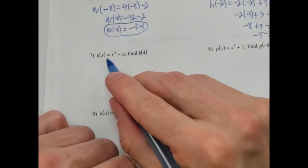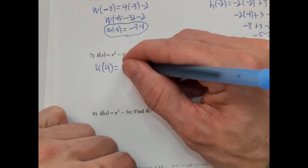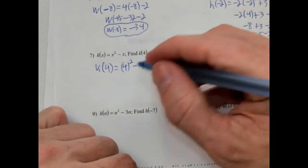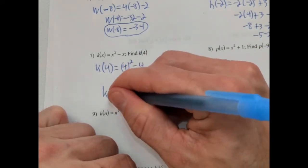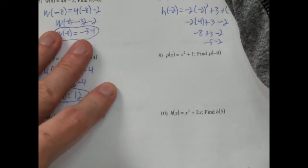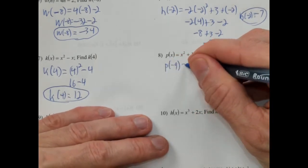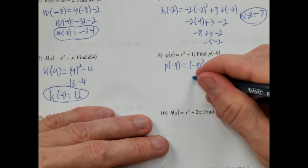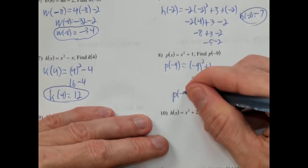k of x with x equal to 4: so 4 squared minus 4. 4 squared is 16, take away 4 is 12. So k of 4 is 12. Then p of negative 9: negative 9 squared plus 1. Negative 9 squared is 81 positive, plus 1 is 82. So p of negative 9 equals 82.